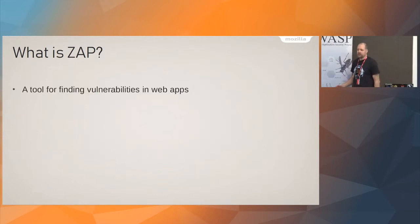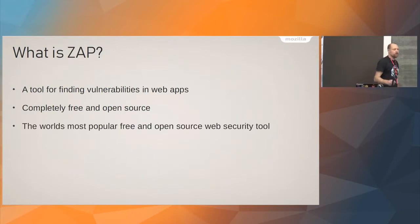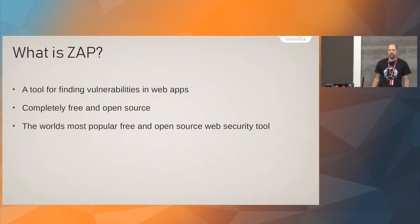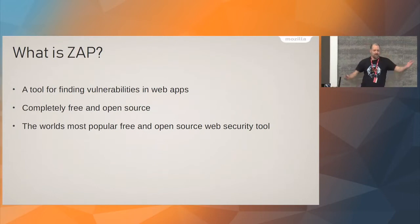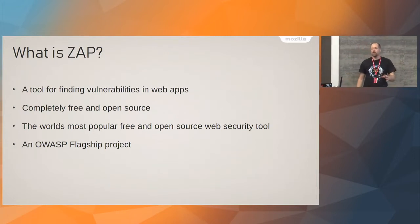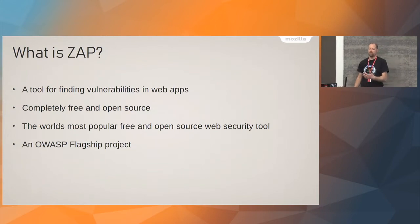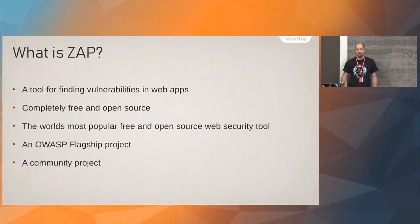So very quickly, ZAP is a tool for finding vulnerabilities in web applications. It's completely free and open source, and will stay that way. It is the world's most popular free and open source web security tool — I know that because I've been saying it at conferences for many years and no one's contradicted me. It is an OWASP flagship project — the ones that are the most stable, most useful, and recommended when getting started with security. It is a community project. We want and encourage people to get involved. We've got far too many fun things to do than people we've got.